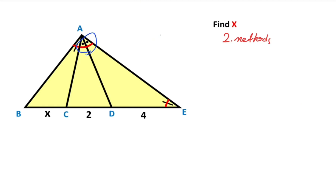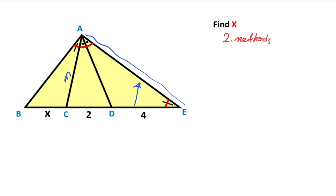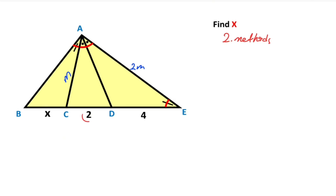We have an angle bisector line here. So according to the angle bisector theorem, if there's an M unit opposite the length 2, then opposite the length 4 must be equal to 2M. Because we know that the ratio of these two sides — M over 2M — must equal the ratio of these two sides.